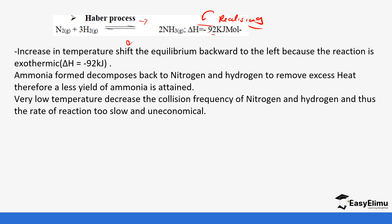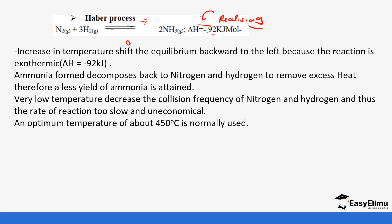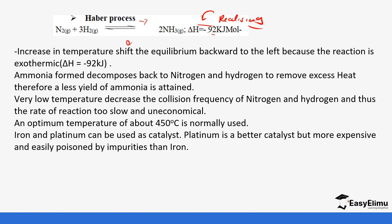Very low temperatures decrease the collision frequency of nitrogen and hydrogen, meaning the rate of reaction is too slow. While low temperatures may favor the equilibrium position, they make the reaction very slow and uneconomical. So an optimum temperature of 450°C is accepted, which helps in the production of more ammonia.